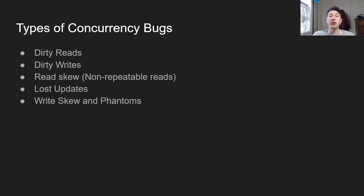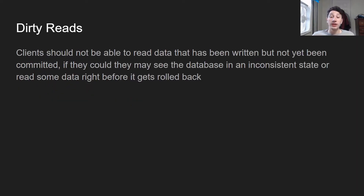There are five types of concurrency bugs we're going to talk about: dirty reads, dirty writes, read skew, lost updates, and write skew in conjunction with phantoms. What are dirty reads? This is basically saying that if data has been written by a transaction but it hasn't yet committed — let's say a transaction has to make multiple writes and one has been done but the other hasn't — any writes that have not been committed should not be read by a different transaction.